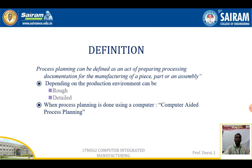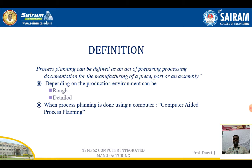Coming into computer-aided process planning — when the process plan is done using a computer, it is called computer-aided process planning. It allows more storage of process plans and makes it easy to modify the process plan. Process planning interconnects design with the manufacturing field, and computer-aided process planning interconnects CAD with CAM. That is about CAPP.